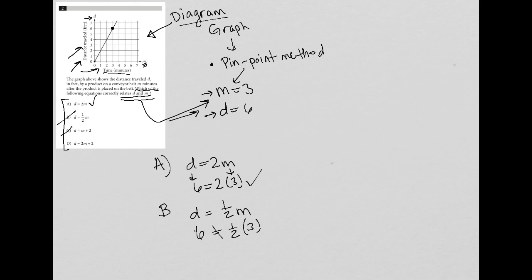And if you tried C, you'd see the same thing there, that C also does not work out. Six is not equal to five. And D also does not work out. Six is not equal to eight. So the only answer choice that is correct or that works here is choice A. And that is the correct answer.